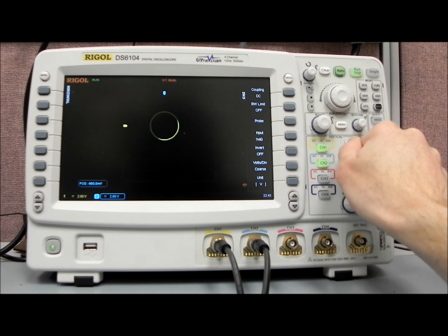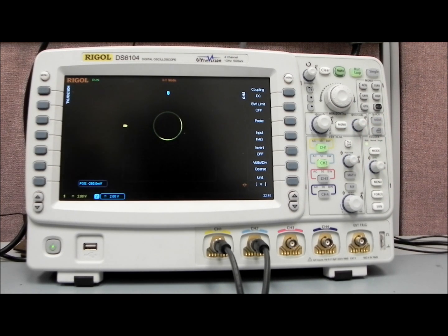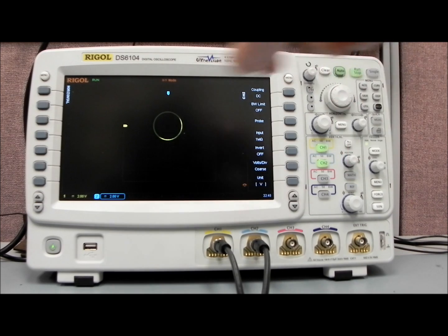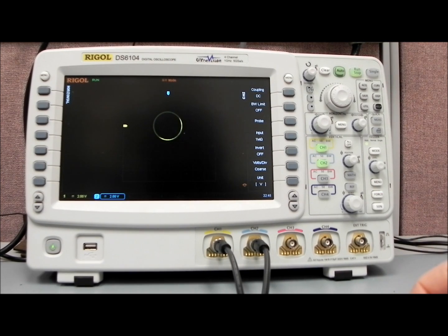So we can center that up a little bit. And now what we have is a perfect circle because these are 90 degrees out of phase. So we're plotting X versus Y and now we get the phase that's going to be a circle when they're 90 degrees out of phase.